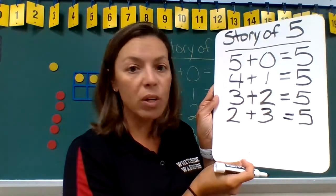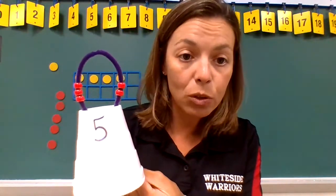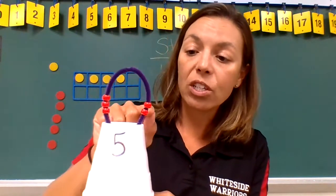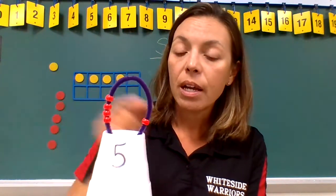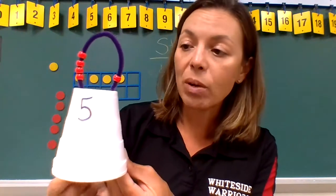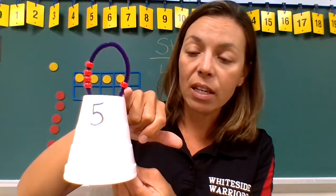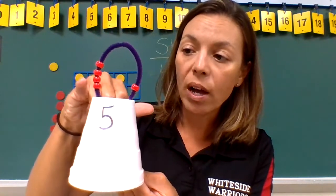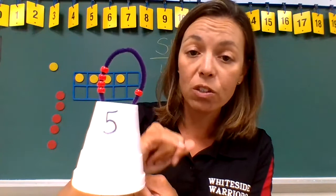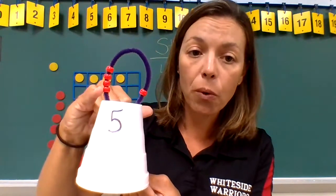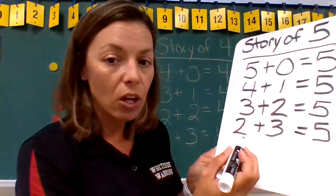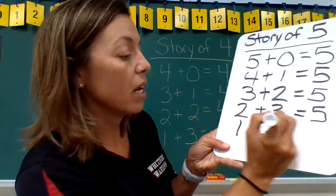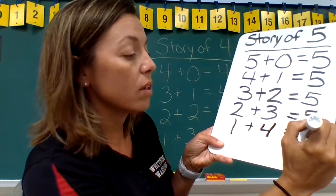All right, but we're not done yet. Let's look at our cup — can we still move some of these beads? Absolutely we can. We have two on this side, so we're going to move another one over. Now our number sentence has changed. We have one bead on this side plus one, two, three, four beads on the other side. One plus four equals five. Let's record it. One plus four equals five.